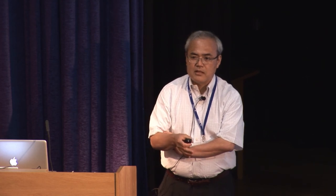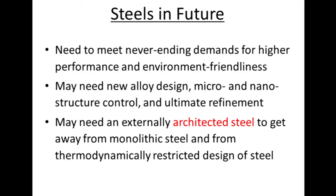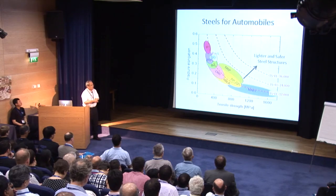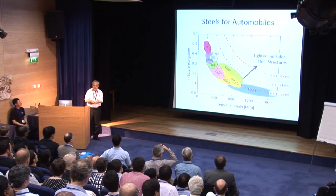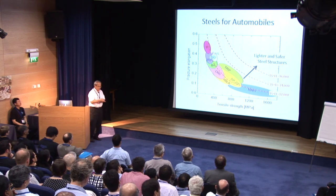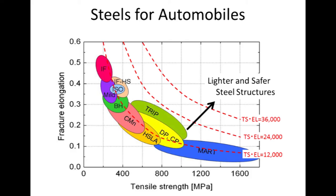It looks like we have done almost everything to improve steel, but still the demand for high-performance steels is never-ending. With increasing environmental consciousness, the demand becomes stronger and stronger. For example, looking at automobile steels, higher strength and higher ductility are demanded. We need to meet that demand — we have to go in this direction.